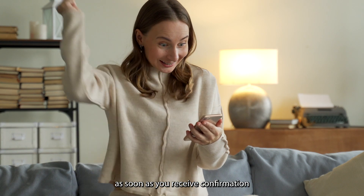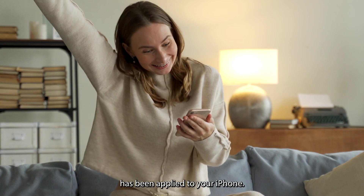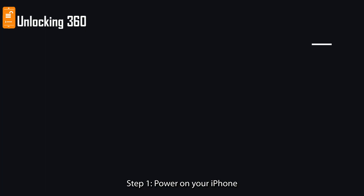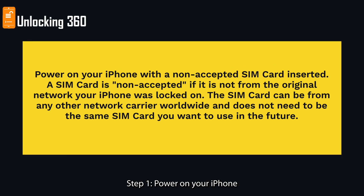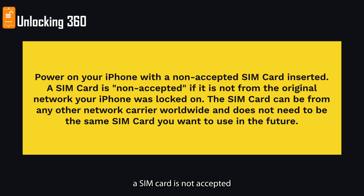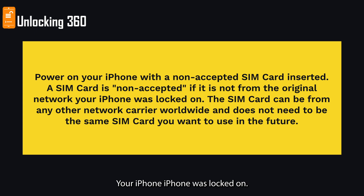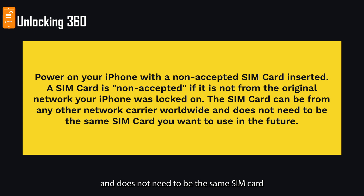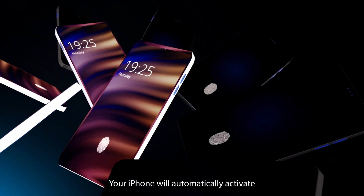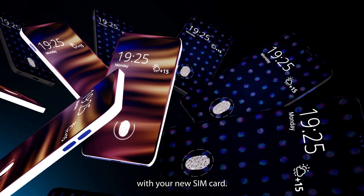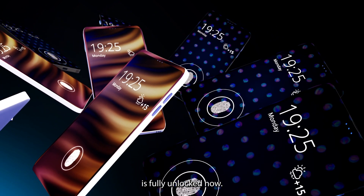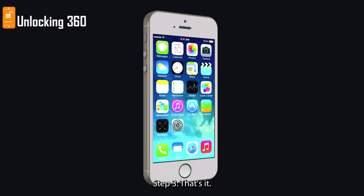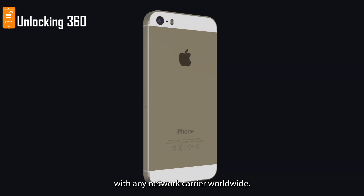As soon as you receive confirmation that the unlock has been applied to your iPhone, follow these steps. Step 1: Power on your iPhone with a non-accepted SIM card inserted. A SIM card is non-accepted if it is not from the original network your iPhone was locked on — it can be from any network carrier worldwide. Step 2: Your iPhone will automatically activate with your new SIM card, meaning it is fully unlocked. Step 3: That's it — you can now use your iPhone with any network carrier worldwide.